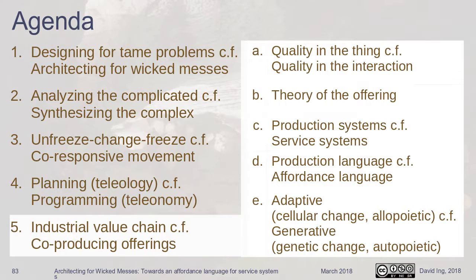Industrial value change versus co-producing offerings: there's a philosophical change around whether you look at quality in the thing versus quality in the interaction. This will lead us toward thinking about affordances. There's a theory of the offering that's a systems-based approach to services. We'll talk about production systems versus service systems, affordances, and finish with the idea of adaptive versus generative.